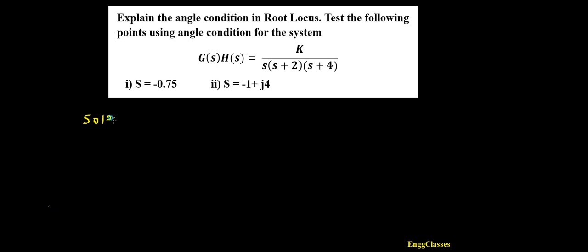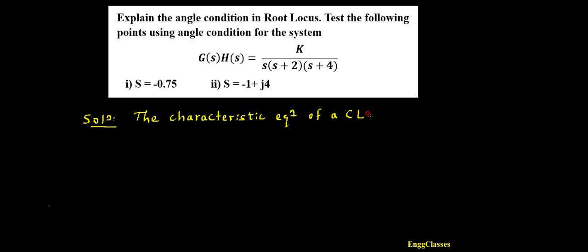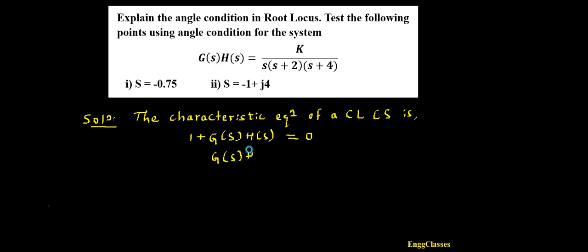To understand the angle condition, I need to consider the characteristic equation of a general closed loop control system. The characteristic equation is always in the denominator: G(s) divided by 1 plus G(s)H(s). So I need to consider 1 + G(s)H(s) and equate this to 0. This characteristic equation of any general closed loop control system can be rewritten as G(s)H(s) = -1.